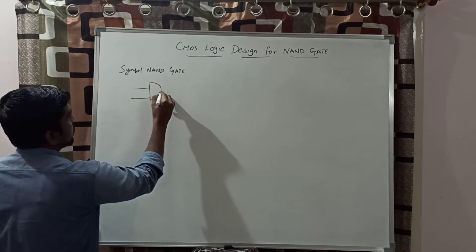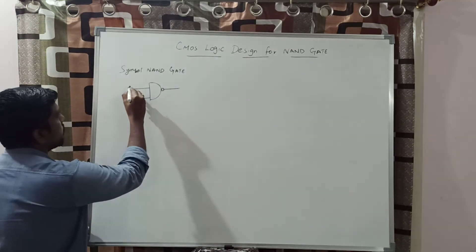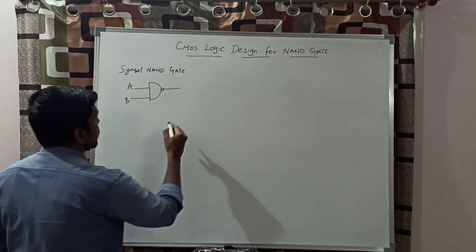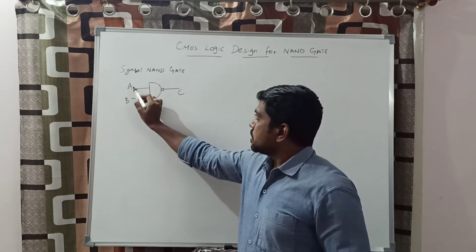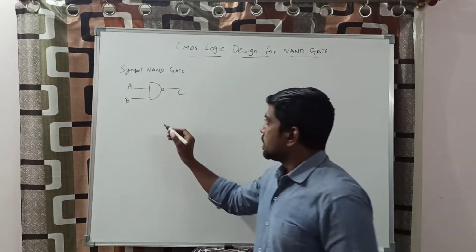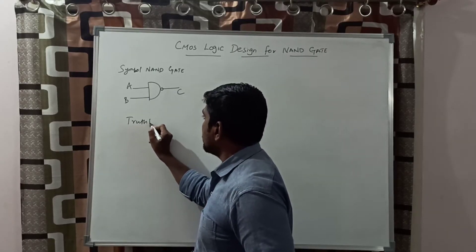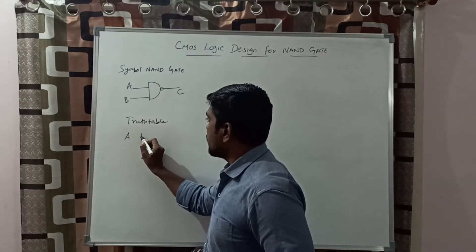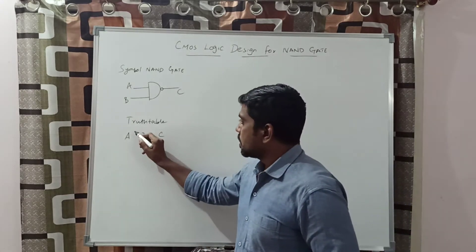The logical symbol for NAND gate has two inputs, namely A and B, and the corresponding output is C. You apply the two inputs A and B and finally get the result C. Then you write the truth table for NAND gate, assigning the input values A and B with result C.